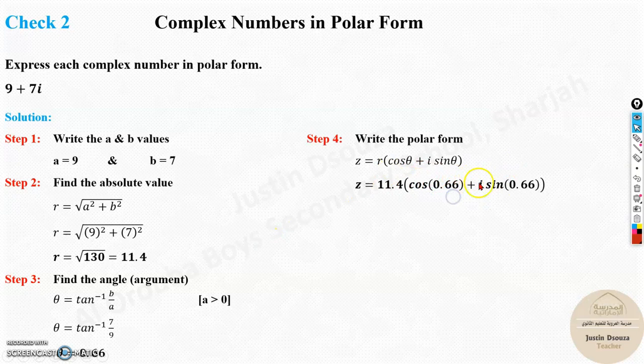So, now in the polar form, always it's written in radians. So, it's r is 11.4, and over here we have cos 0.66. That is in radians. So, that's the answer. This is the polar form.